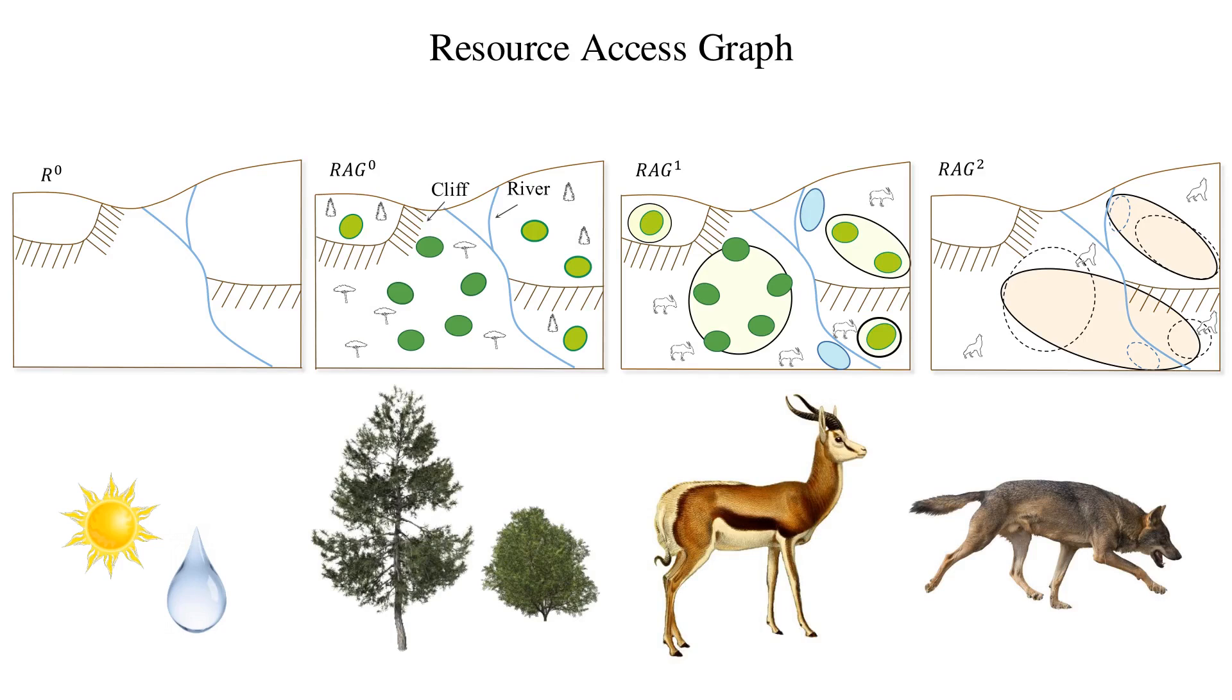The graph nodes represent resources for a given species, and the edges encode the accessibility and the traveling time between the nodes.